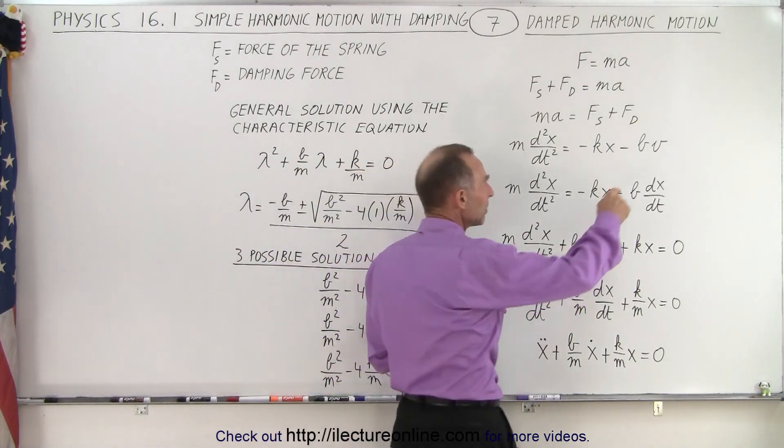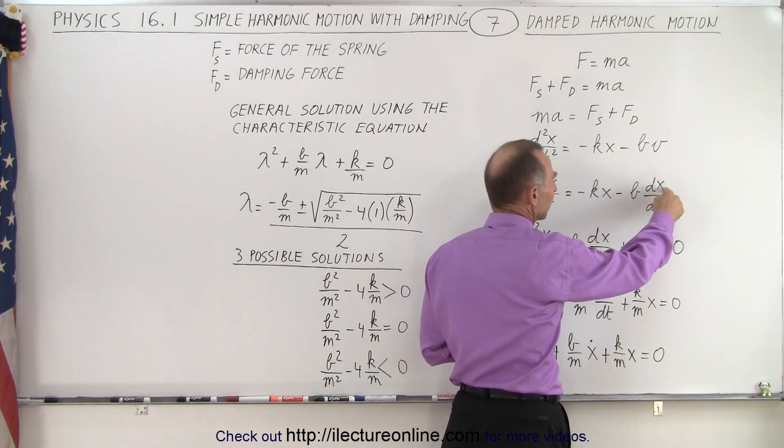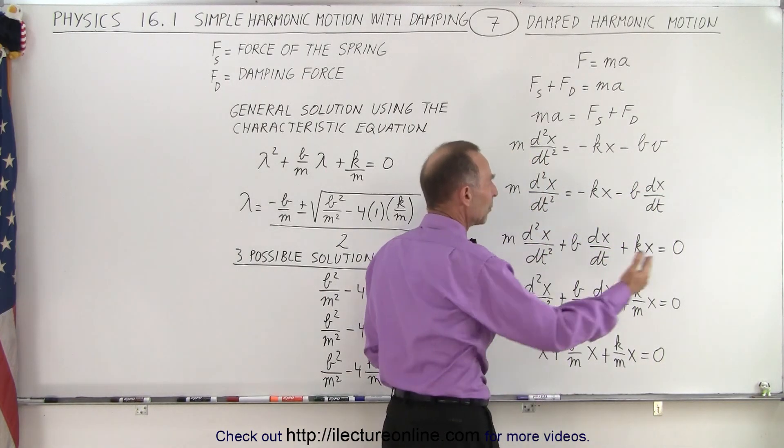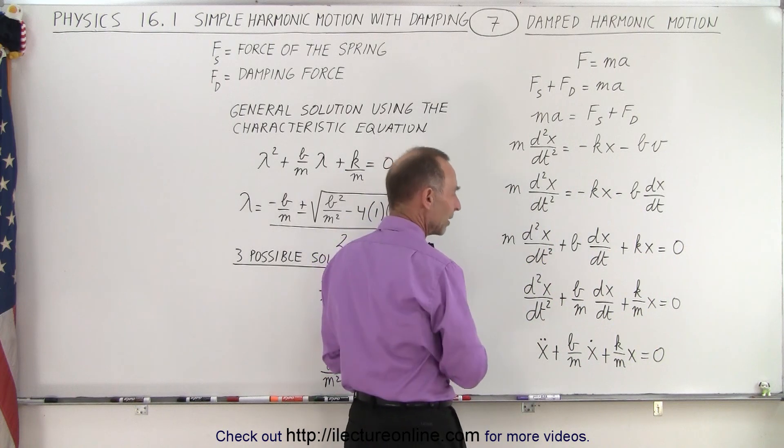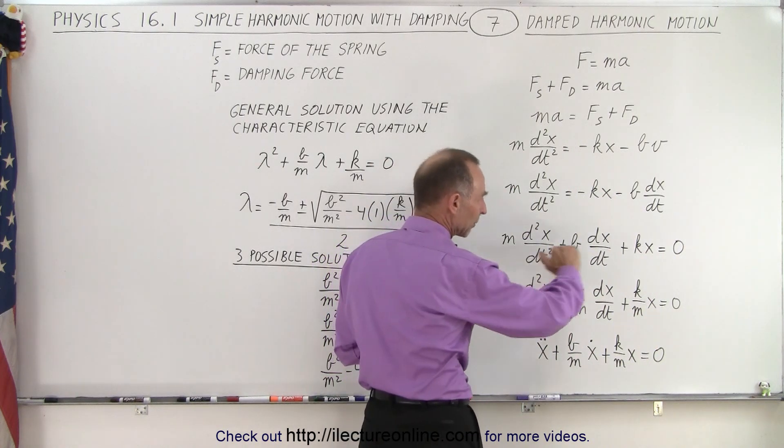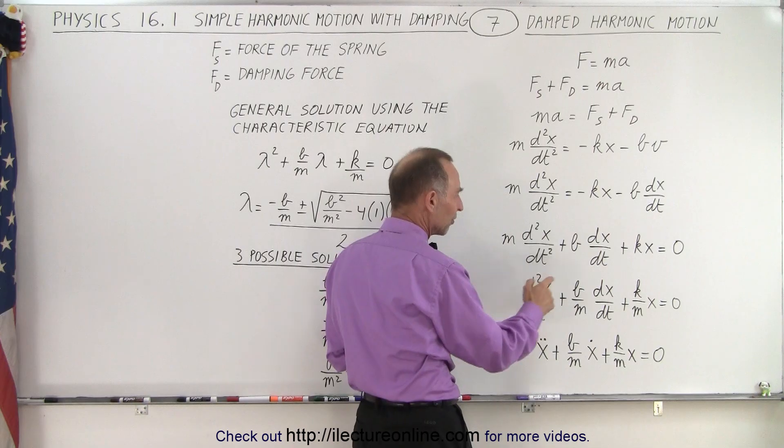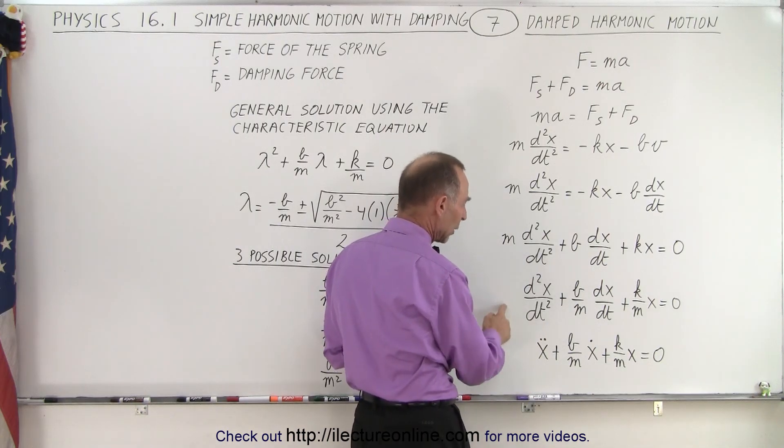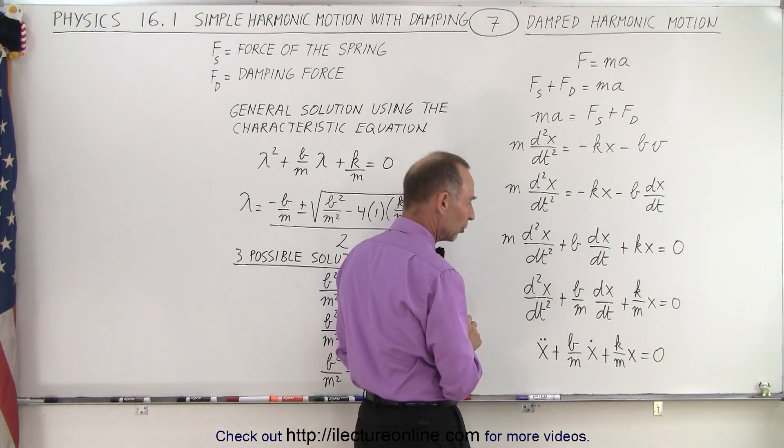So instead of writing V, we're going to write it as the first derivative of x with respect to time. Then we're going to move all the terms over to one side. Everything that becomes positive equals zero. Divide both sides by M to get a 1 in front of the square term.